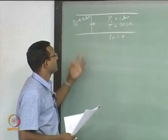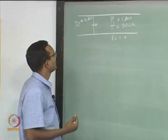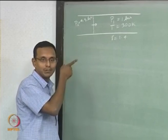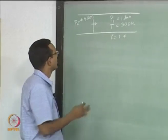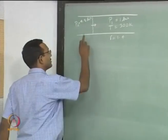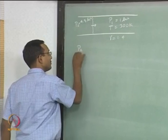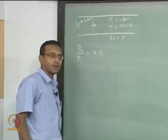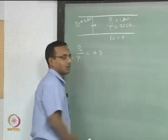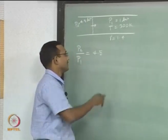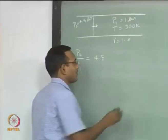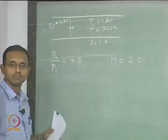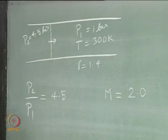To characterize the shock, the only information given is P2/P1. P2/P1 is given as 4.5 — no other information about the shock is provided. Going to normal shock tables for gamma equal to 1.4, we find that P2/P1 equal to 4.5 occurs at Mach number equal to 2.0. So we have a Mach 2 shock — that is our shock strength.